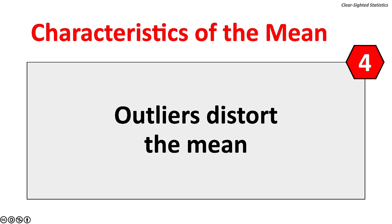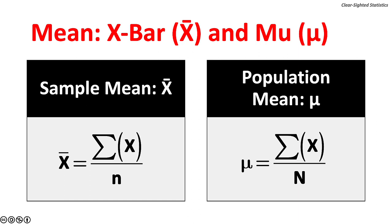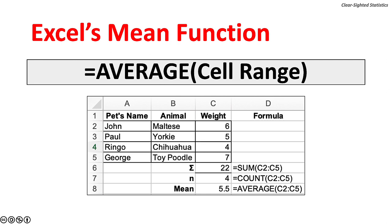The sample mean is symbolized by x-bar, while the population mean is symbolized by the lowercase Greek letter mu. X stands for the random variables. The capital Greek letter sigma stands for the operation of addition. The mean equals the sum of all the random variables x over the number of observations in the sample, lowercase n, or the number of observations in the population, uppercase N. Excel's mean function is AVERAGE; the argument is the cell range.